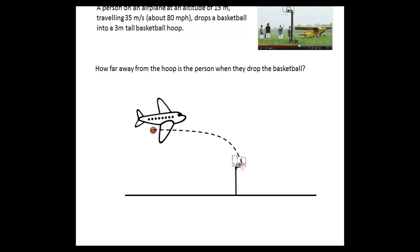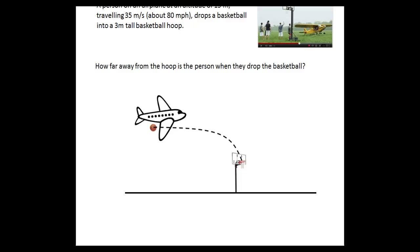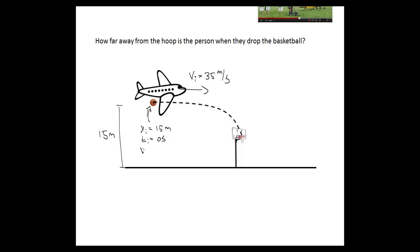Our picture is already drawn here, so let's label things that we know. We know that the plane is at an altitude of 15 meters, which means that the initial y position of the ball is 15 meters. We can label the initial time as 0 seconds. We're told the speed of the plane — the initial speed is 35 meters per second — and so that also means the initial speed of the basketball, since it was on the plane, is 35 meters per second to the right.